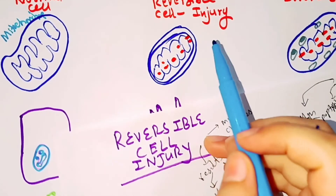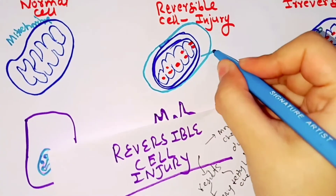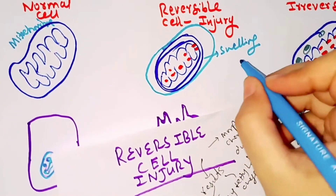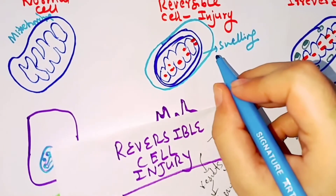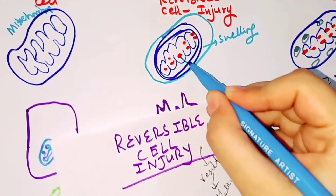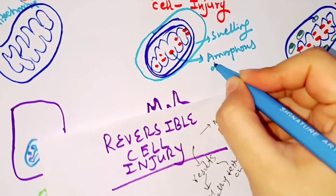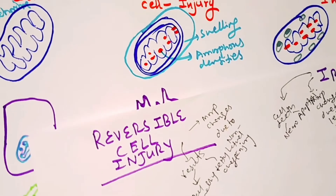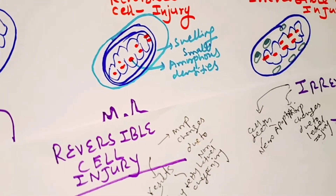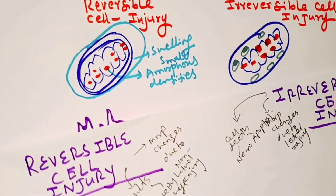In reversible cell injury, the mitochondria will swell even more. The mechanisms were explained earlier; here we focus on differences. In reversible injury, there is swelling and small amorphous densities (phospholipid-rich) form. In irreversible cell injury, there are large amorphous densities within the mitochondria.